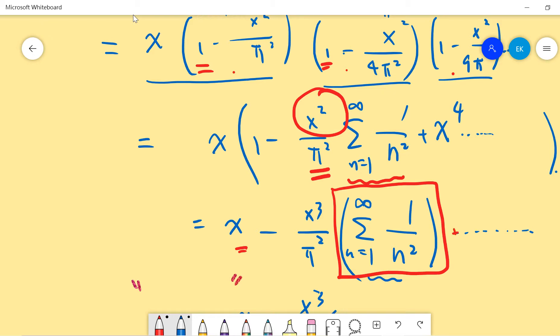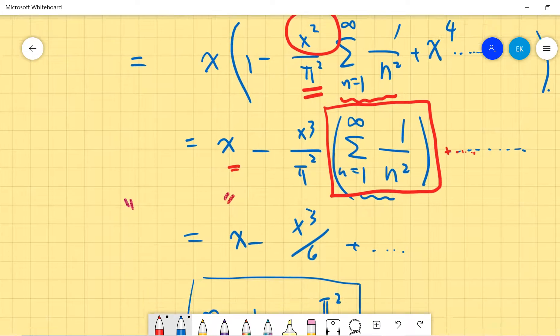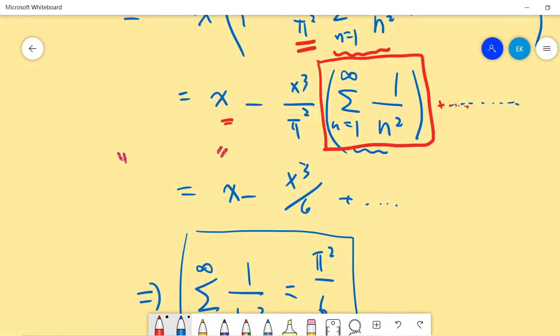And basically we already know that sin(x) equals to this, right? So you see the first connection is minus 1/6 with minus sum 1 over n². And there is 1 over π². So 1/6 can multiply π² and change minus to plus.